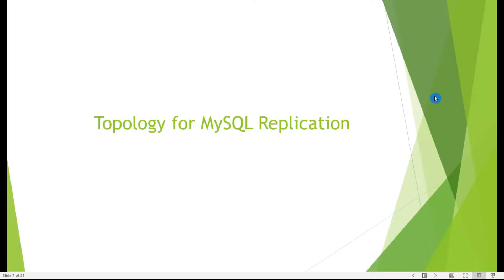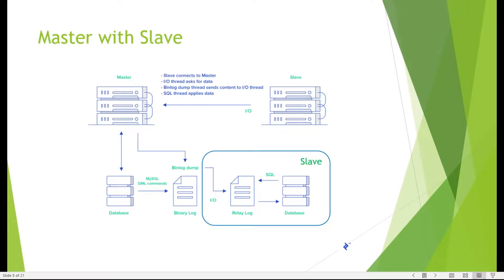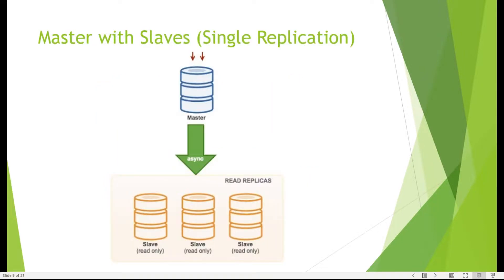Let's discuss the different topologies in MySQL replication. Previously we discussed the master-slave topology, where we have one master and one slave. The next topology is a single master with multiple read replicas — one source with multiple replicas.